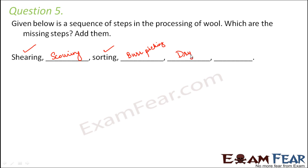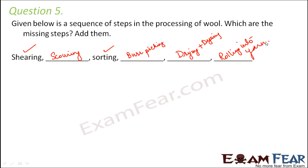Once that is done, the fibers are dried and dyed — drying plus dyeing — so the wool is dried properly and can also be dyed into different colors. Once that is done, you have wool fibers of different colors. All you need to do is roll them into yarns and then send them to the market, where people will make different types of clothes and blankets using the wool.